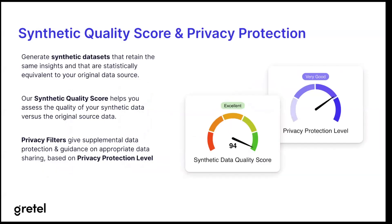The outcome of generating synthetic data sets that have the same statistical distribution and correlation of your original data requires us to provide some guarantees. We do that through our synthetic quality score and privacy protection. When you generate synthetic data sets, you need to know if they're fit for use. This supplemental data protection from our privacy filters is essential if you're going to be using your data for training machine learning models. We have four mechanisms: overfitting prevention, similarity filters, outlier filters, and differential privacy.